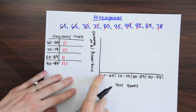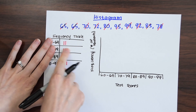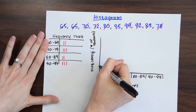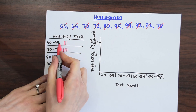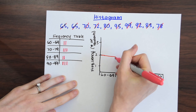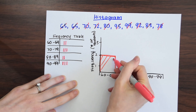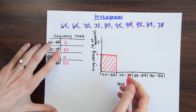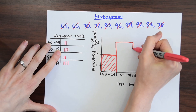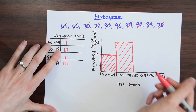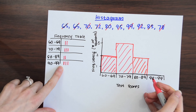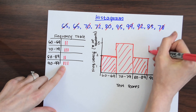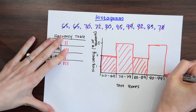For the Y axis values, we just use our tallies. The highest tally we have is three, so that's really all we need to go up to — one, two, and three. Now we can look at our frequency table and start graphing. From 60 to 69 we have two tallies, so we draw and shade that in. 70 to 79 we have three tallies, so we go up to three. 80 to 89 we have two tallies. And our last bin, 90 to 99, we have three tallies again. We shade that in.